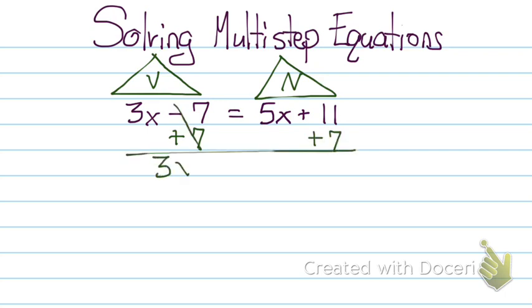So now we have 3x equals 5x and 11 plus 7 gives us 18. Now let's look in that number house. Who doesn't belong in the number house? In other words, who is not strictly just a number? You're right! 5x.